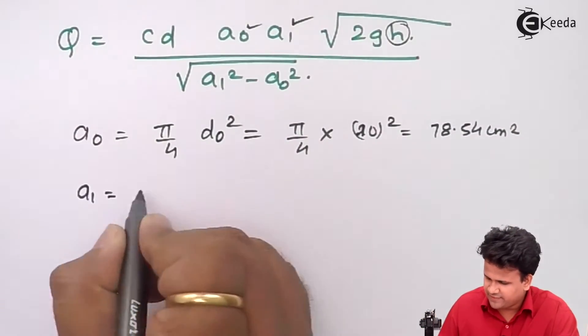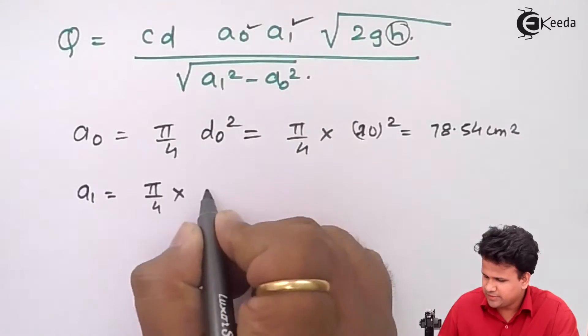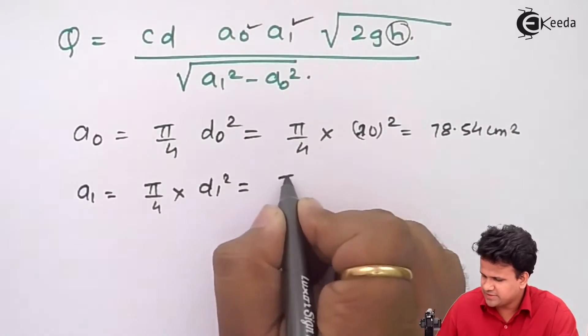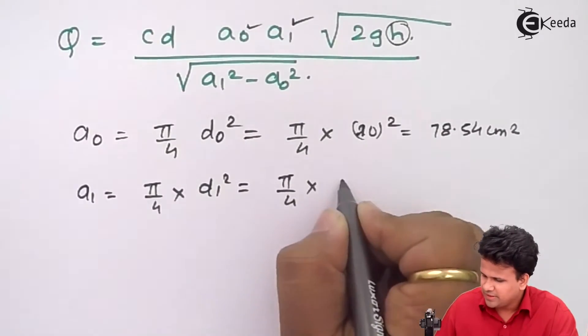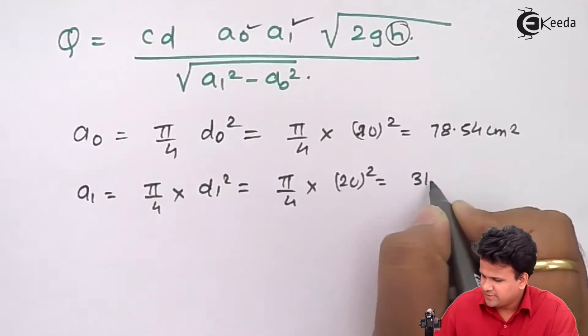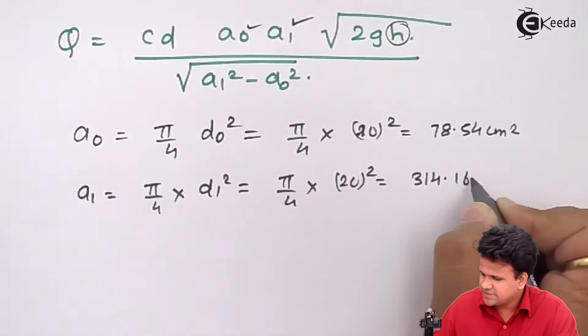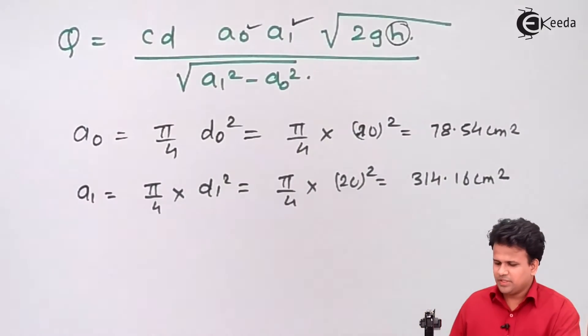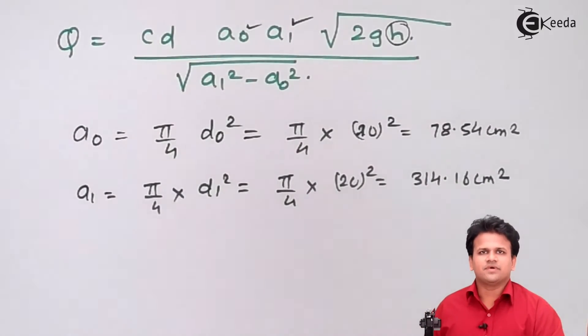Similarly area a1 is pi by 4 into d1 square that is pi by 4 into 20 square equals 314.16 centimeter square. So these are the two areas a1 and a2.